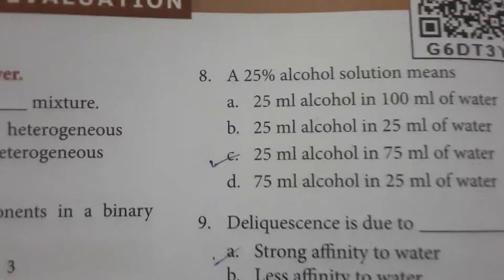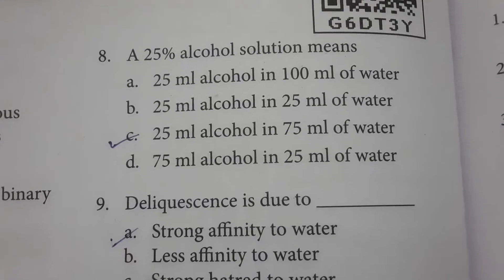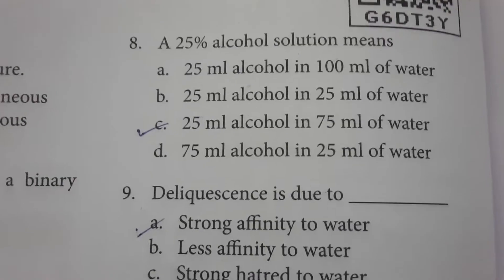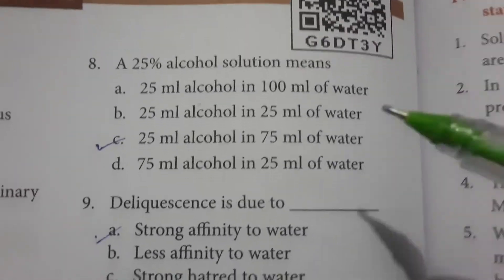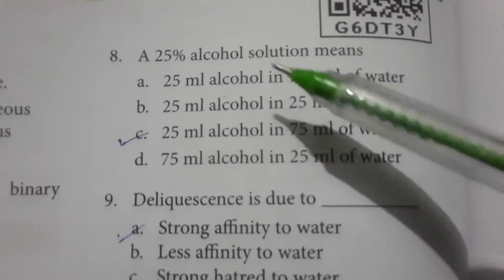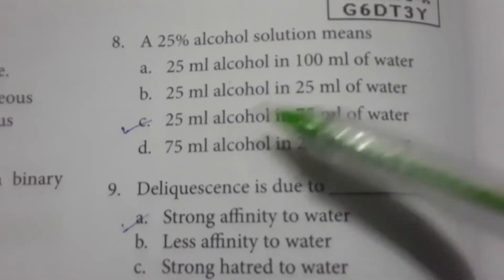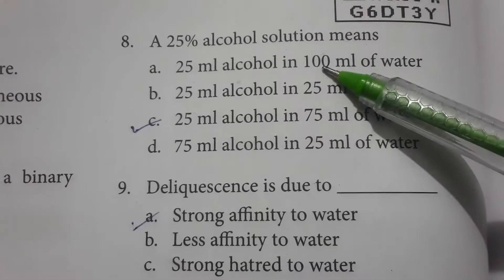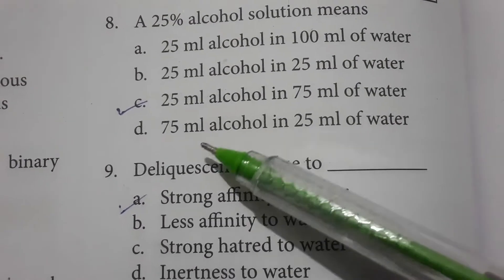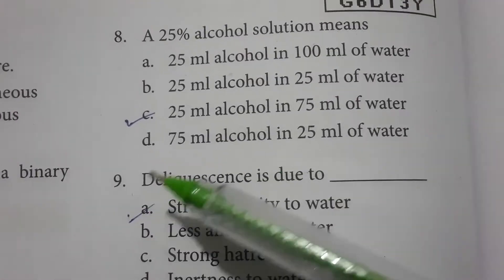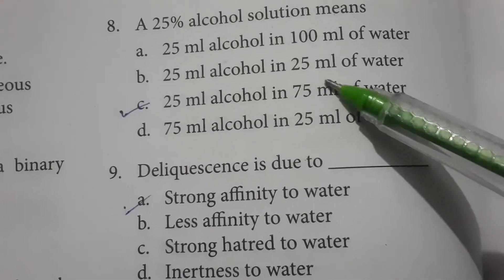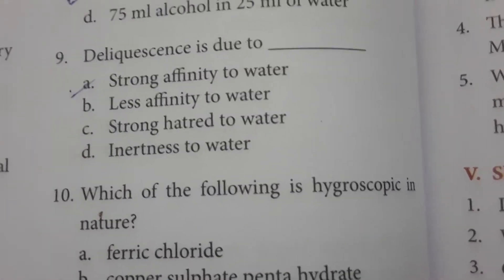For the eighth question: 25 percent alcohol solution means 25 ml of alcohol is present, so 75 ml is water — that gives 100 ml total.